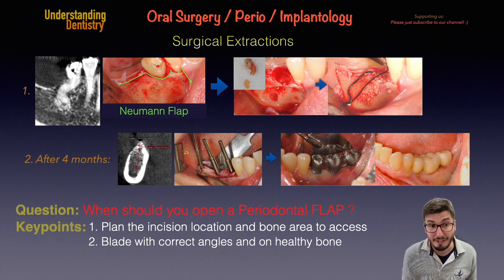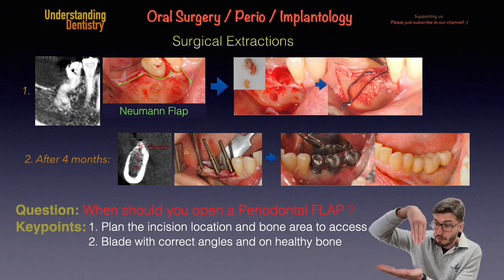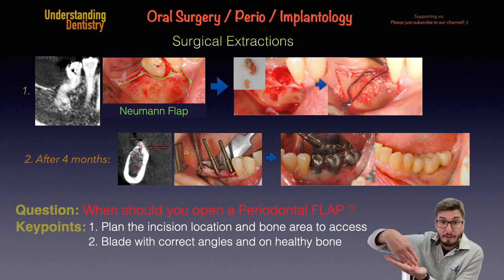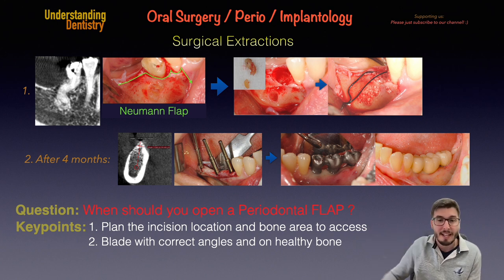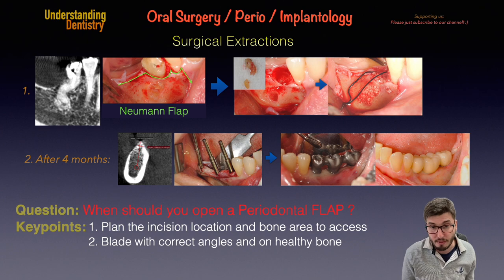The second key point is to use your blade with the correct angles and always on healthy bone. You need to start your incision at 90 degrees with the scalpel blade, perform the incision at 45 degrees, and then finish the incision at 90 degrees again. That is the most acceptable technique described in the literature.